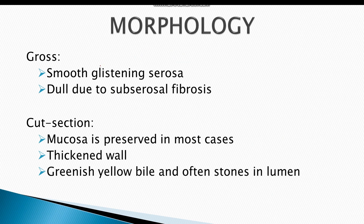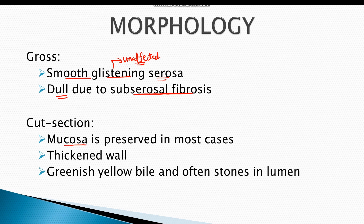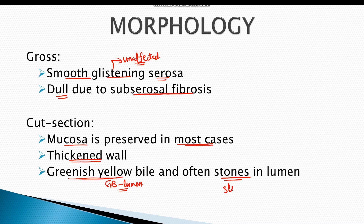The gross appearance of the gallbladder reveals a smooth and glistening serosa, meaning it is unaffected in early cases. In advanced cases, the serosa appears dull due to subserosal fibrosis. The cut section reveals preservation of the mucosa in most cases, whereas the gallbladder wall is thickened due to chronic inflammation. There is greenish to yellow bile inside the gallbladder lumen. In most cases, small stones are present inside the lumen and there could also be biliary sludge.